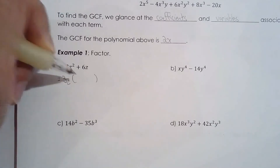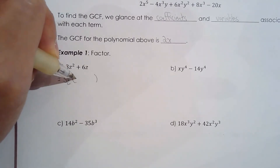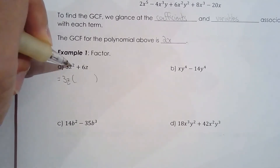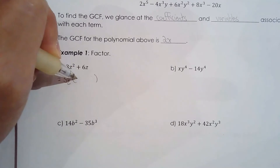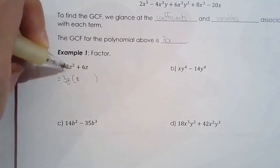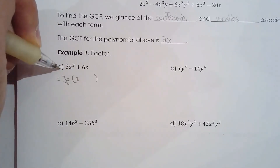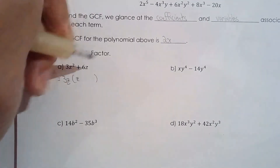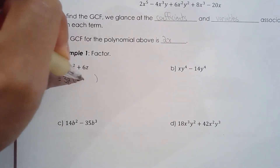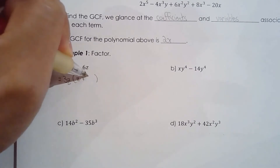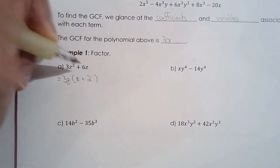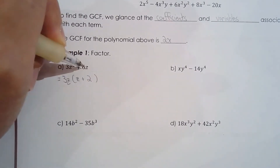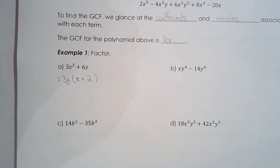3z squared divided by 3z: 3 over 3 is 1, and z squared over z is just z, leaving z. That makes sense because I took away one factor of z, so one is left over. 6z divided by 3z is 2, and there's no more z because it had one and I used it when factoring. So the answer is 3z times (z + 2).